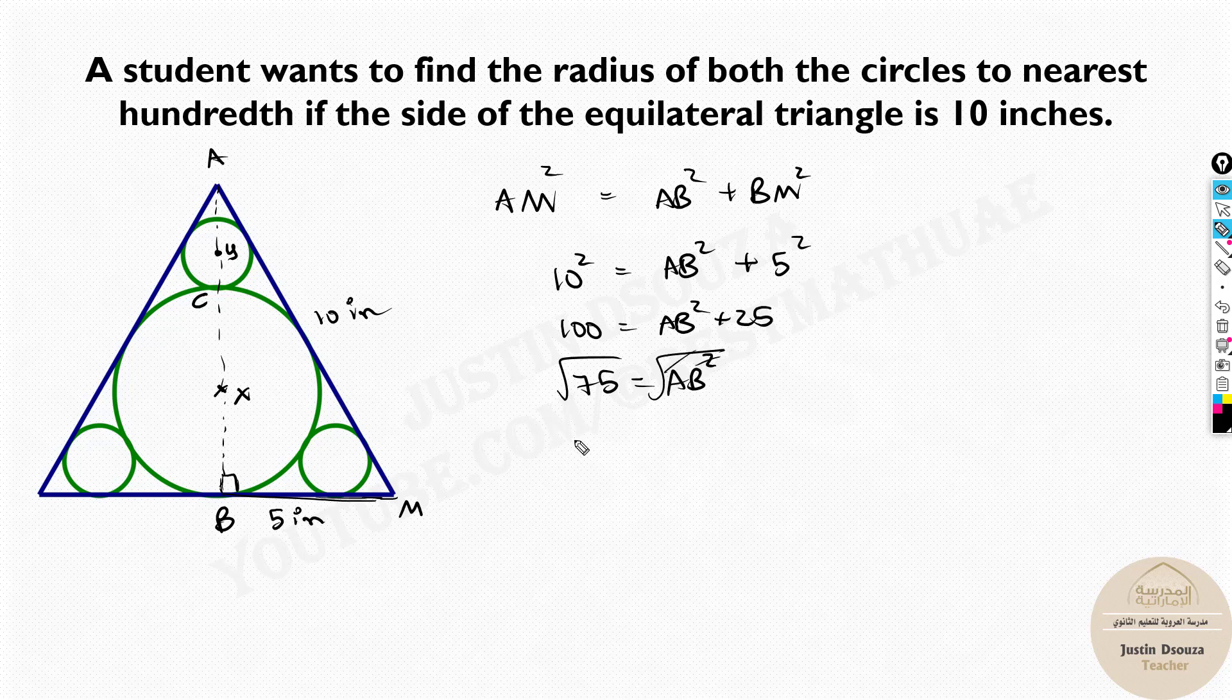You can take square root on both sides and the square and root cancel off. You will remain with square root of 75 equals AB, or you can write it as 5√3 because 75 is 25 times 3. We can take 25 out and get 5.